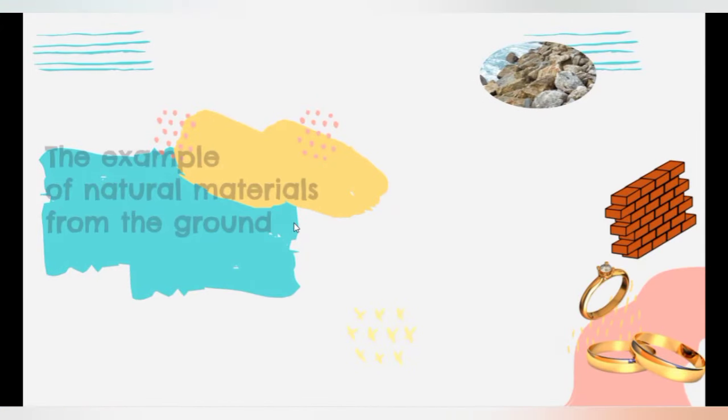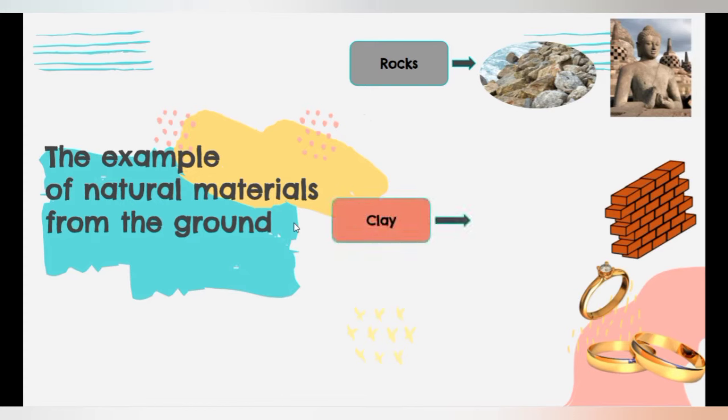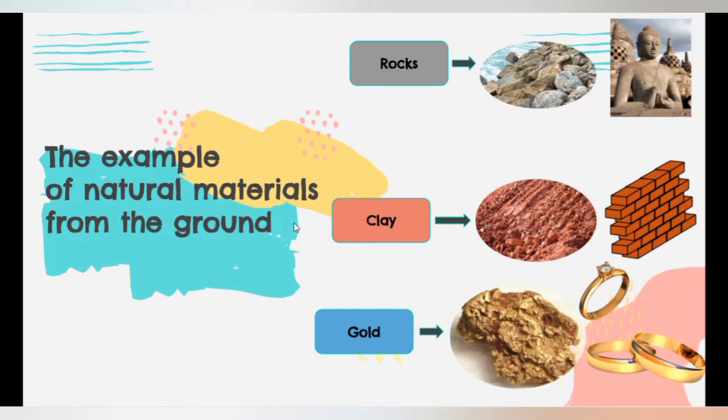Let's take a look at the example of natural materials from the ground. First, rocks. It can be used to make statue. And clay, it can be used to make bricks. And gold, it can be used to make gold rings.